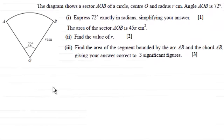Hi there. Now in this question we're given this diagram that shows the sector of a circle, centre O, and radius r centimetres. Angle AOB is 72 degrees, and what we've got to do first of all is express 72 degrees exactly in radians, simplifying your answer.